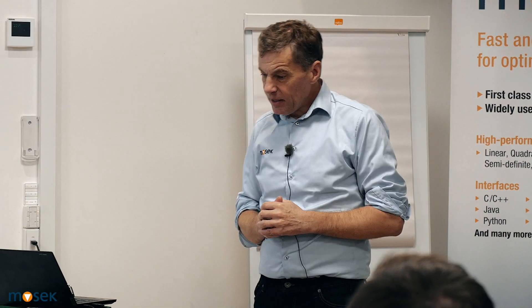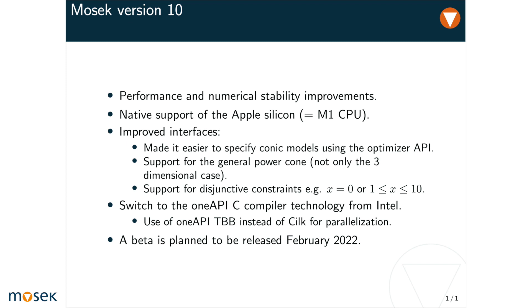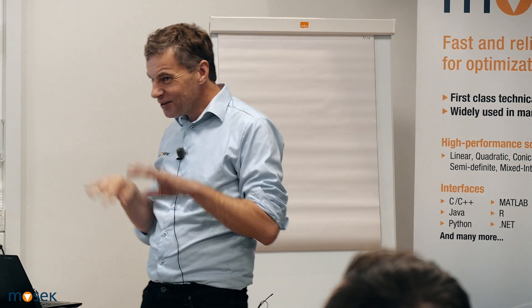We are currently working on Mosek version 10. In this business, when you solve optimization problems, you always want to solve them faster because you want to have more assets in your portfolios, and you can only do that if you don't need too much time. So each new version typically runs faster. Also, the hardware that we are running on is developing — different CPU vendors add new features to the CPUs, and we want to exploit those features. So we have to modify the software. Version 10 will have performance and numerical stability improvements. Numerical stability is always an issue because you tend to put in strange data that can give problems, so we try to deal better with that.